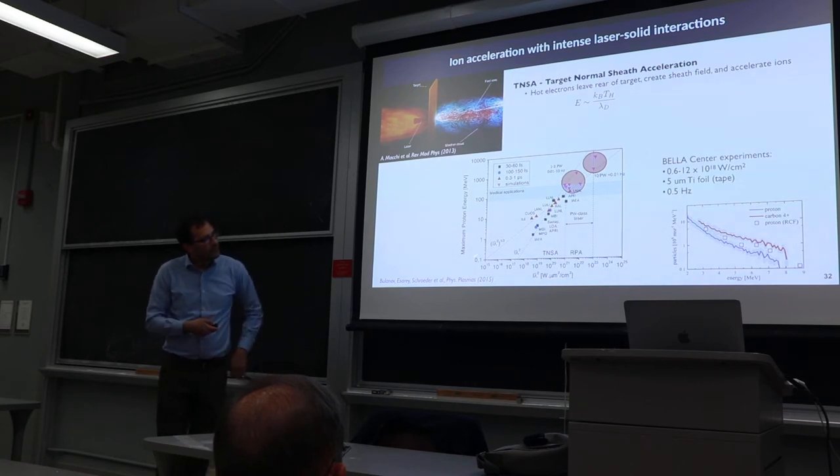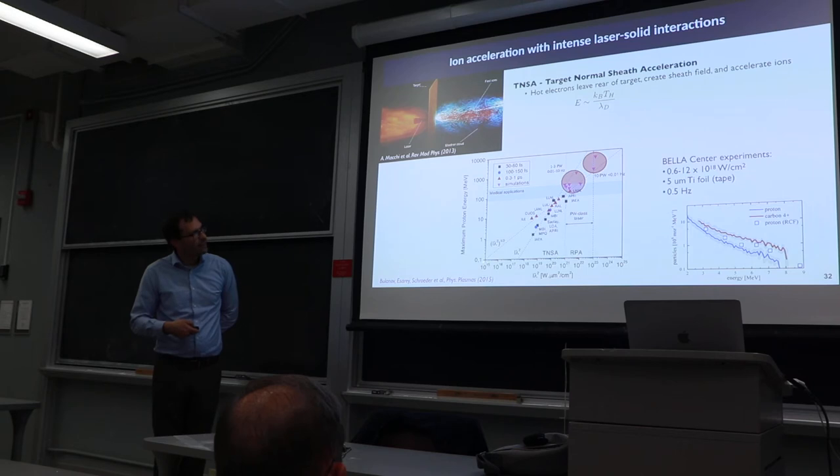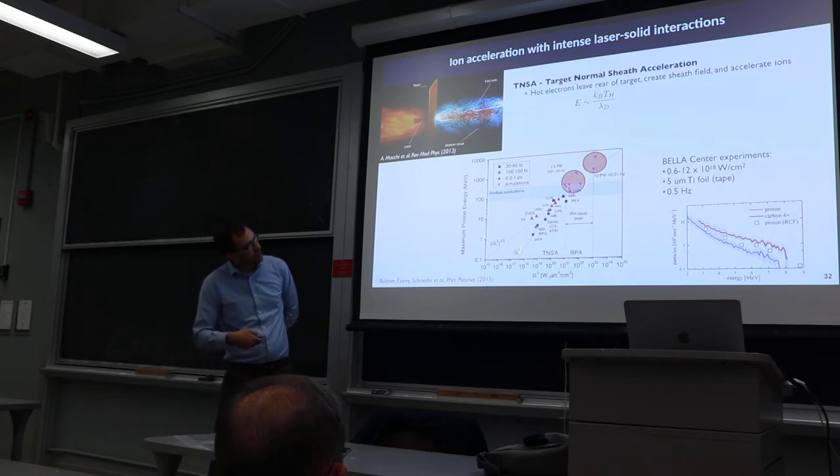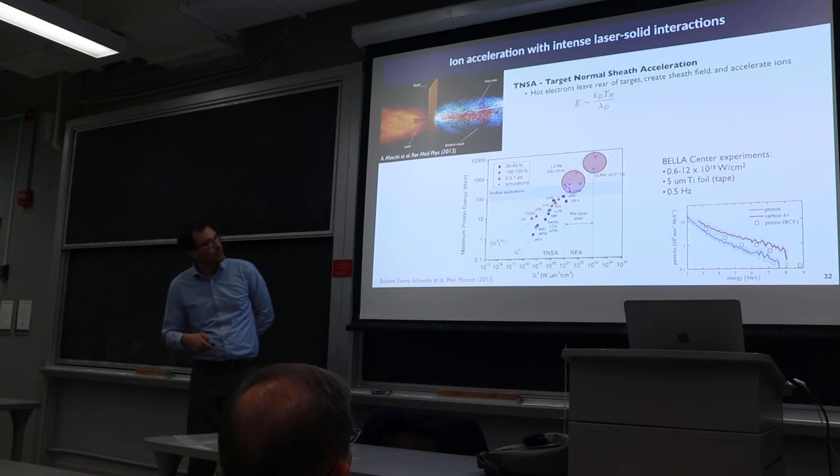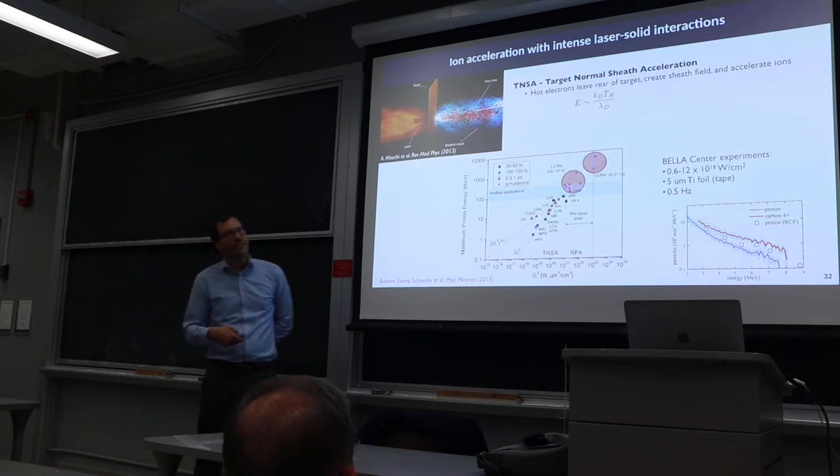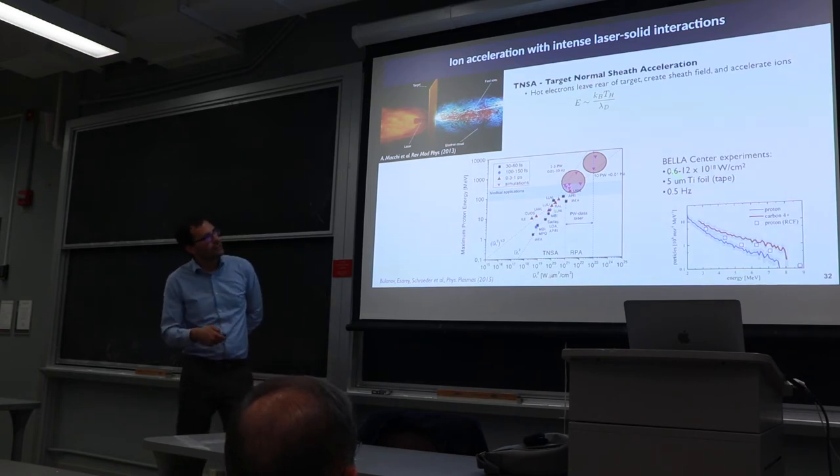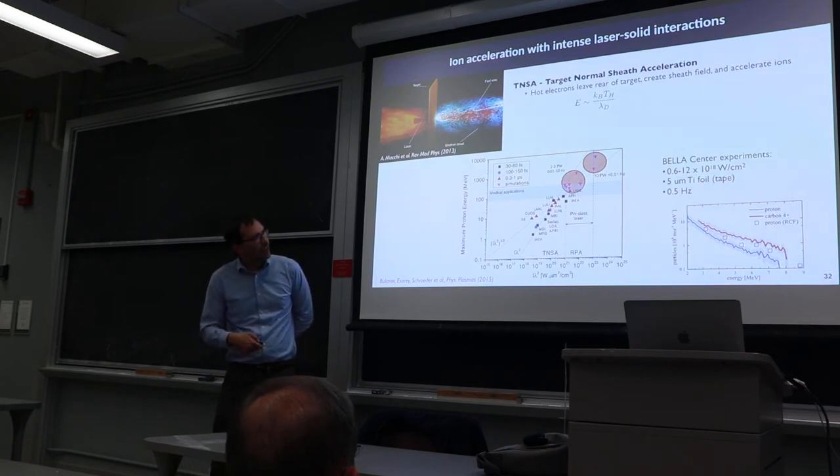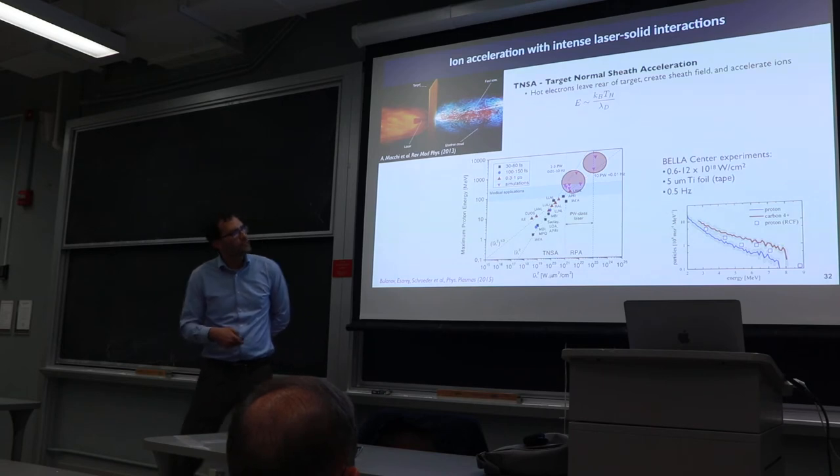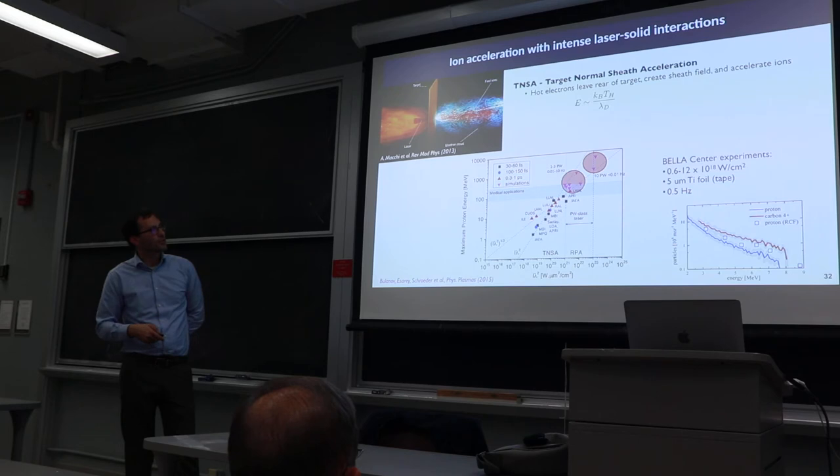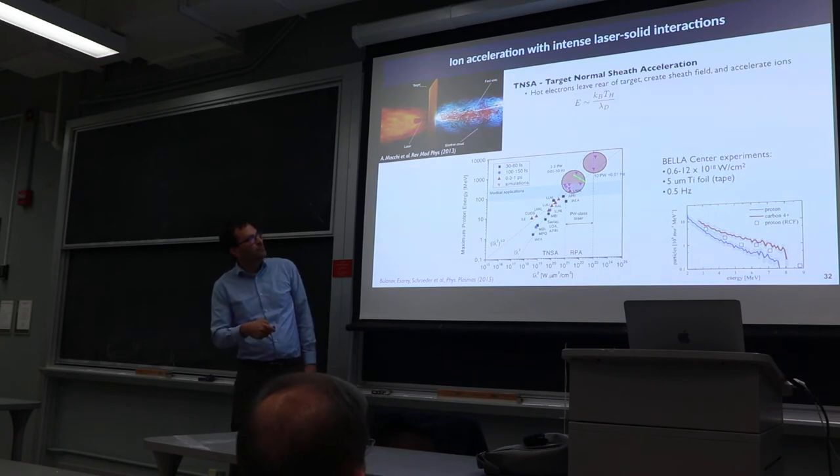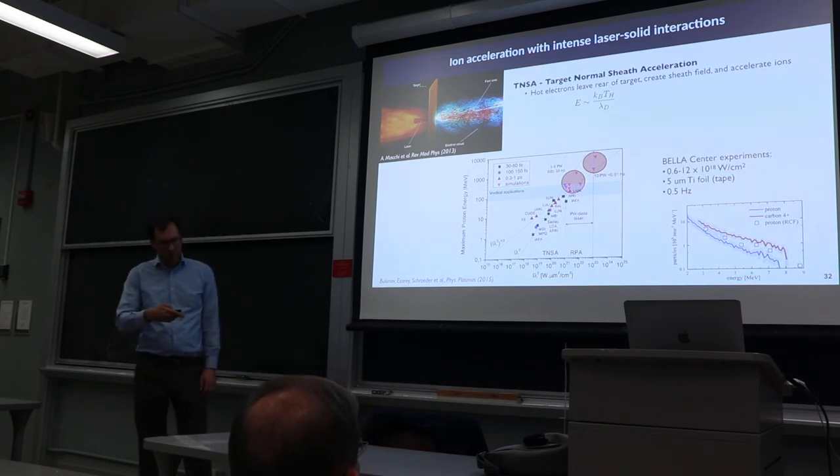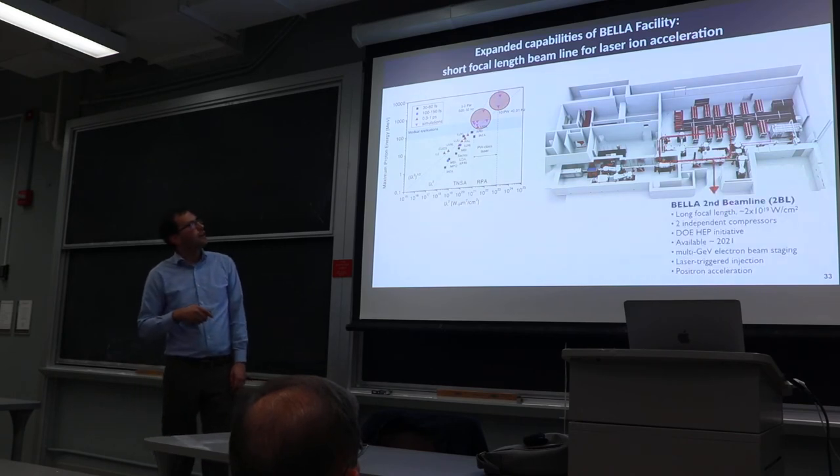At the BELLA Center, this shows intensity versus maximum proton energy—this is a whole bunch of experiments. Right now we're at the 10^18 to 10^19 watts per centimeter squared region for our laser pulse, so we expect 1 to 10 MeV protons, and that's indeed what we're measuring. Here's a spectrum—protons at 1 to 10 MeV using a 5 micron foil. What we want to do is increase the intensity by having a short focal length and move up into the 100 MeV proton regime. We also have a project to do this as well.